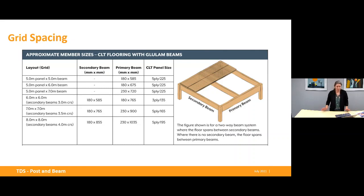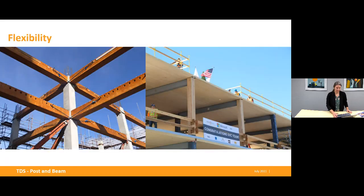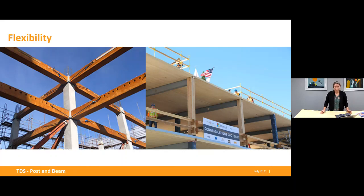In the design guide, we provide approximate member sizes for several different configurations to give you a feel for the beam depths required. In the examples, a six by six metre grid has a structural floor depth between 600 and 900 millimetres, so you can see why it's important to consider this early. You can also mix and match timber elements with other materials. On the left is Winn-Williams House in Christchurch, which uses timber beams with concrete columns. On the right is the Microsoft campus in California, which uses timber floors and columns but steel beams. There are so many possibilities and a way to meet every project brief.